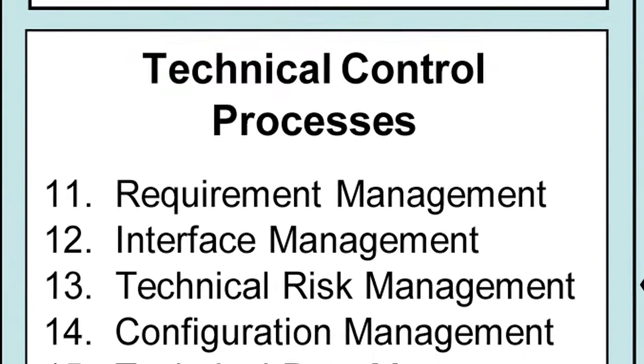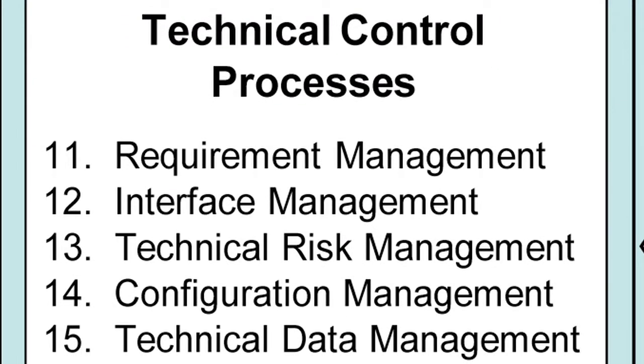In the middle you see technical control processes — steps 11 through 15 — including requirements management and interface management. Requirements management means making sure everyone is using the same set of requirements and that they are controlled. For example, if a power engineer can't find a battery that meets requirements and wants to change them so the battery can produce less energy, that change might impact other people who are designing around a certain amount of power from that battery. System engineers are in charge of saying: wait, I can't allow you to change requirements for the battery because I have to first check if there are system-wide impacts to be considered.